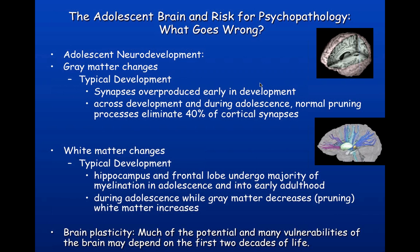There are also changes in the white matter of the brain — these are the white matter fiber tracks. Changes occur in the hippocampus, which is important for memory, and the frontal lobe, important for cognitive control. These brain structures undergo the majority of myelination into adolescence, continuing through adulthood. So during adolescence, while gray matter decreases due to synaptic pruning, there's a concomitant increase in white matter volume. You can think of white matter as like the internet — increasing efficiency.